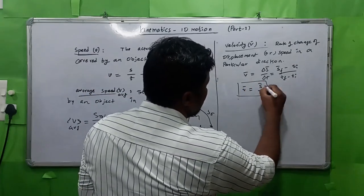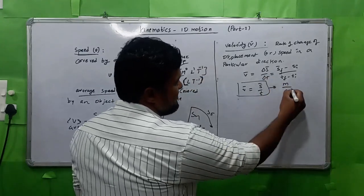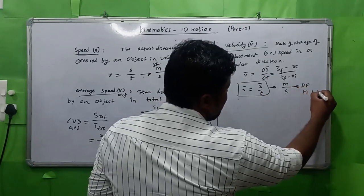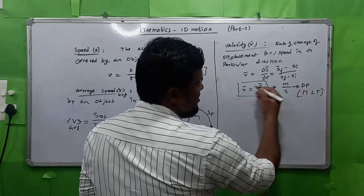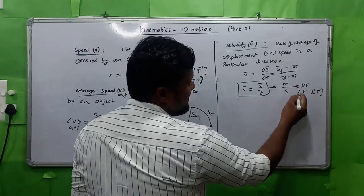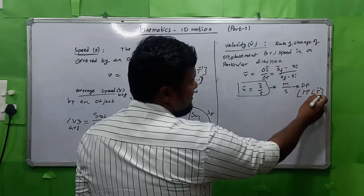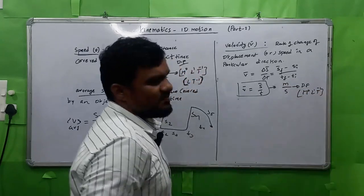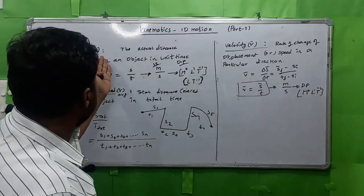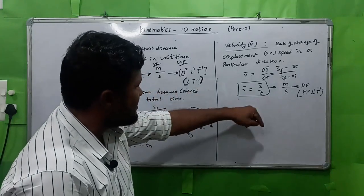The SI unit for velocity is meter per second, since the SI unit for displacement is also meter and for time is second. The dimensional formula is M⁰L¹T⁻¹. If you observe, the SI units and dimensional formula remain the same in the case of both speed and velocity — no difference.